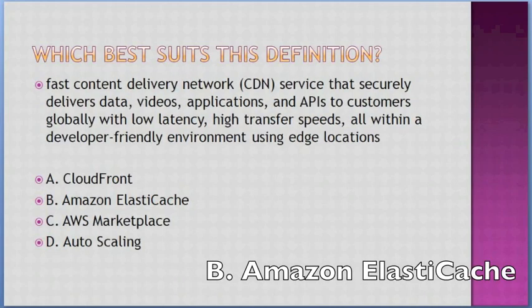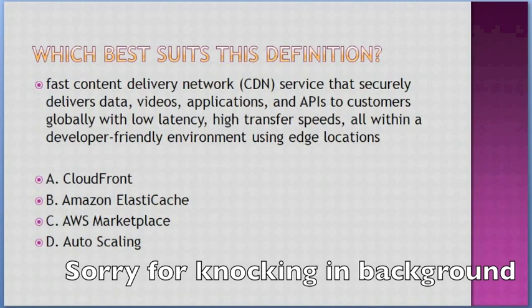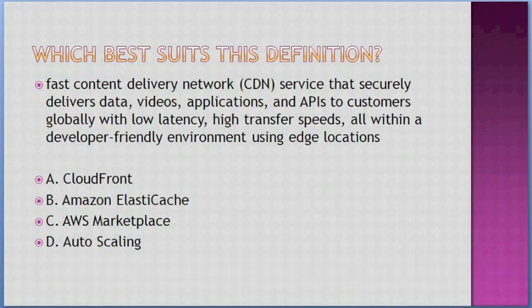Which best suits this definition? 'Fast content delivery network (CDN) service that securely delivers data, videos, applications, and APIs to customers globally with low latency and high transfer speeds, all within a developer-friendly environment using edge locations.' Options: A. CloudFront, B. Amazon ElastiCache, C. AWS Marketplace, D. Autoscaling. Answer: A — CloudFront.